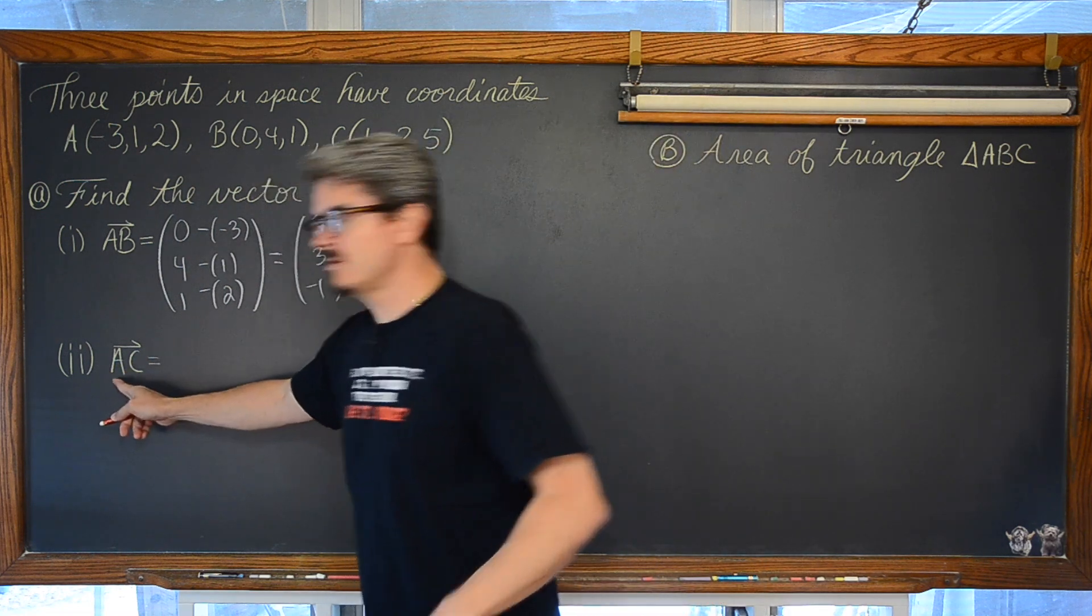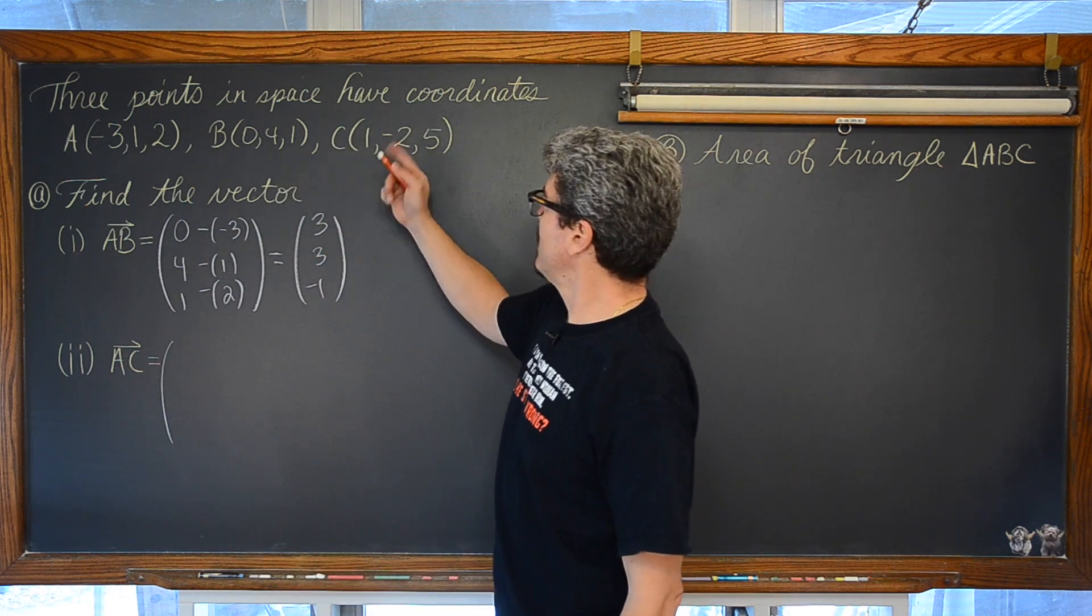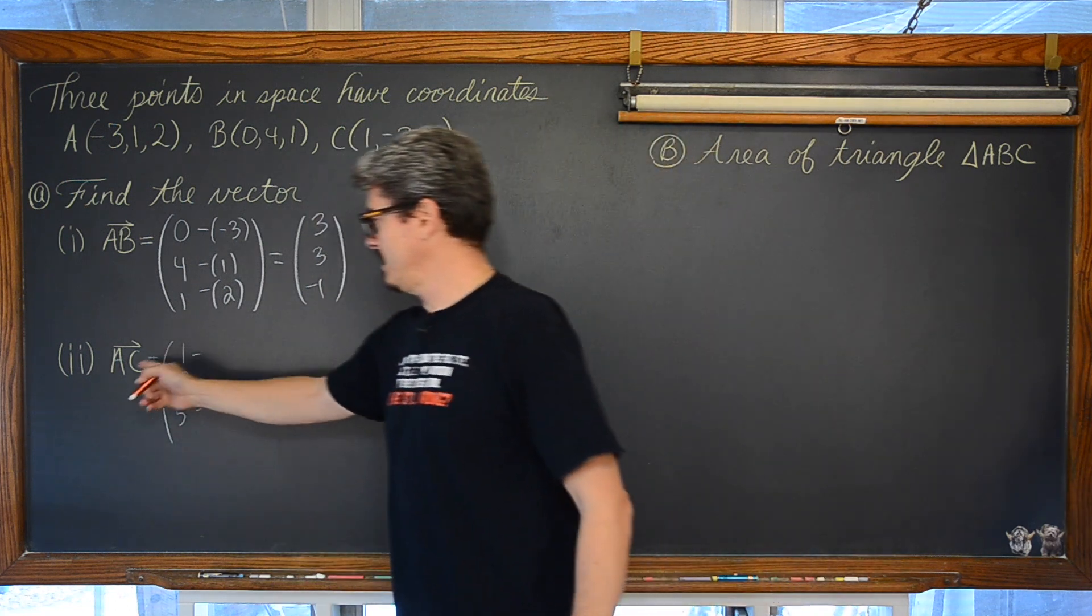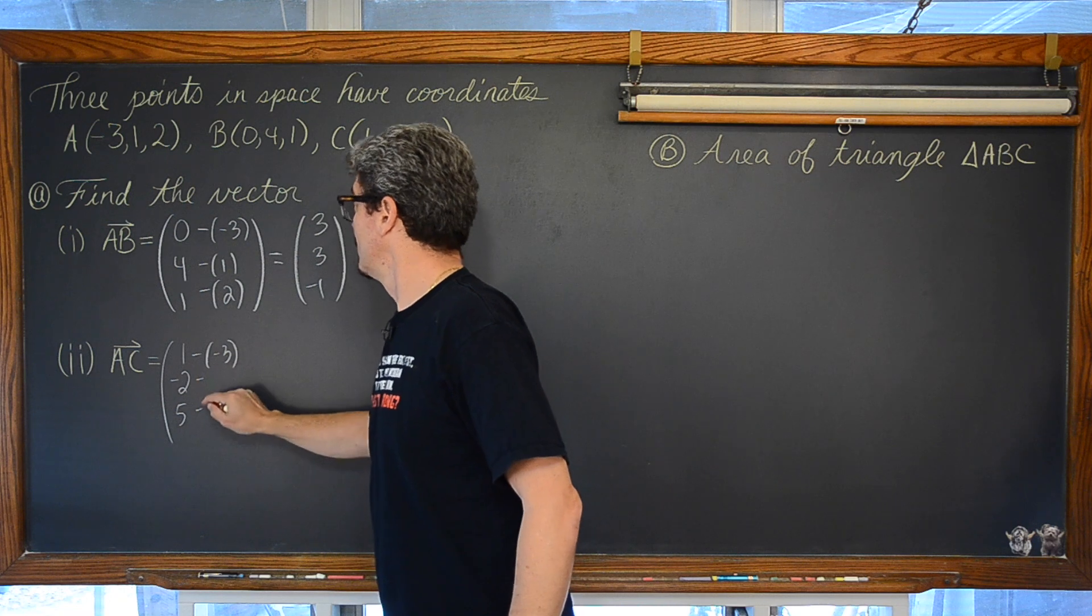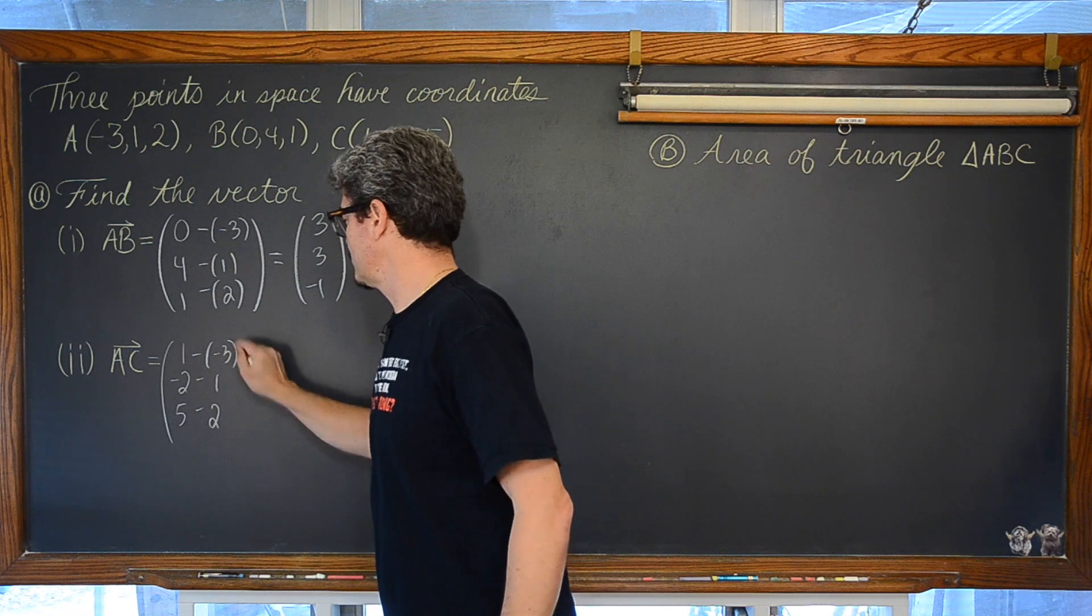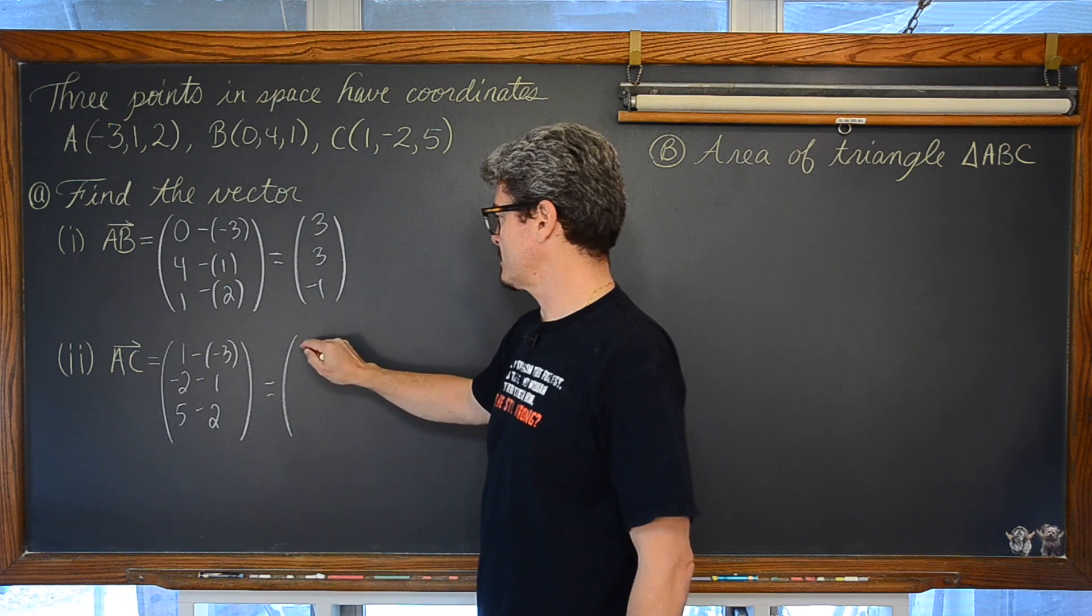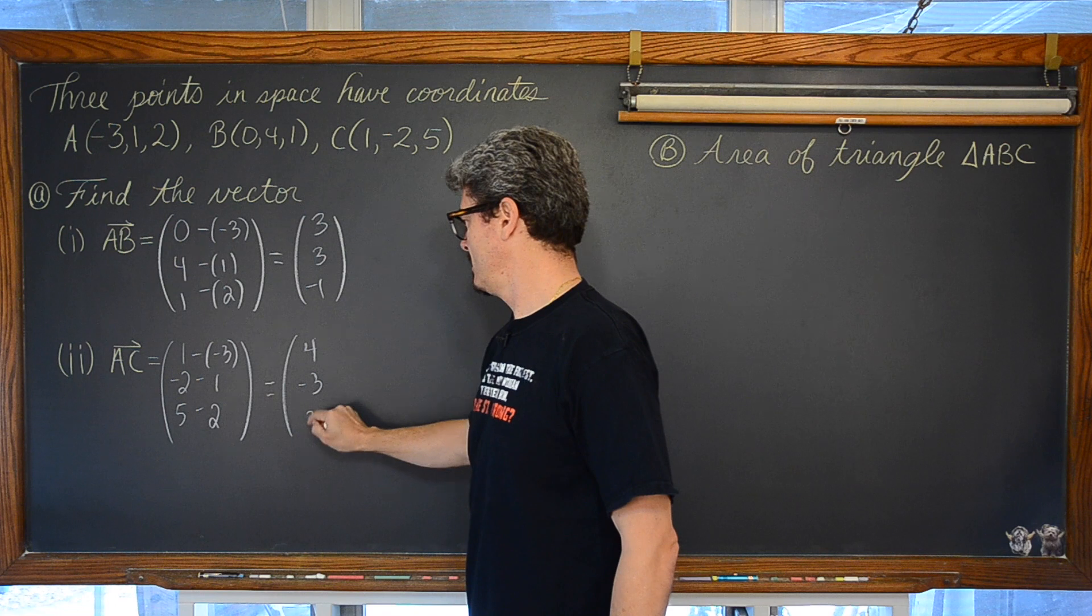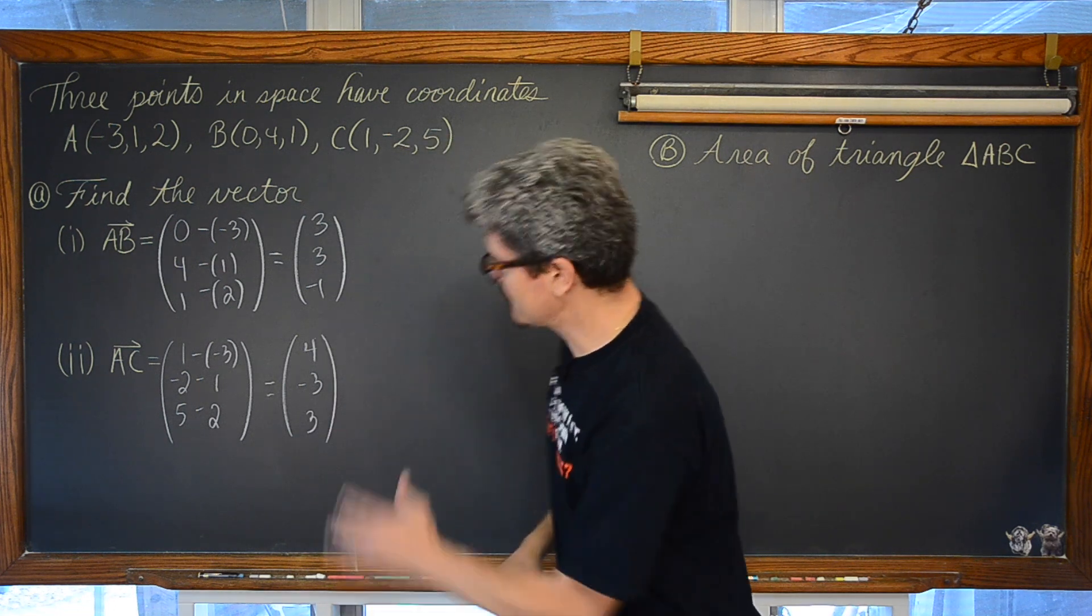Vector AC. Again, initial point of A, terminal point of C. We will start with the terminal point: 1, negative 2, and 5. Minusing with the coordinates of our initial point: negative 3, 1, and 2. So we are looking at vector AC has the components of 4, negative 3, and 3. Just before I go on, make sure to make some silly copy error.